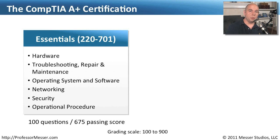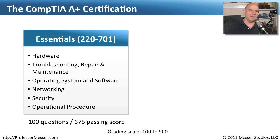To get your A-plus certification, you will need to pass two exams. The first exam is the 220-701, or the Essentials exam. On that exam you'll need to understand hardware, troubleshooting, operating systems, networking security, and operational procedures. There are 100 questions on this exam and your passing score needs to be a 675. The scoring is actually between 100 and 900, and every question is worth a different amount, so you're never sure exactly how many you should get right or wrong — but 675 is passing and the top number is 900.